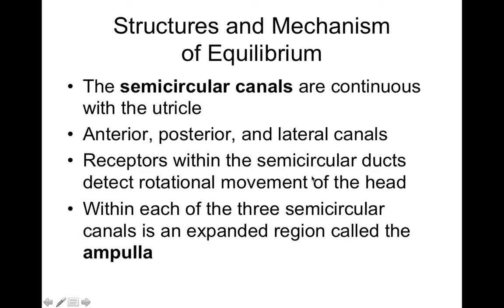The hair cells are embedded in something called the crista ampularis, which is the epithelium containing those hair cells for the semicircular ducts. We can see this process illustrated here: as a person rotates their head, the endolymph in the semicircular ducts moves and bends the cupula. Once the cupula gets bent, the stereocilia get bent, generating action potentials in the hair cells, which get transmitted through axons towards the vestibular complexes of the brain.